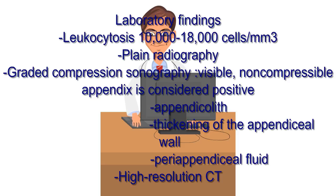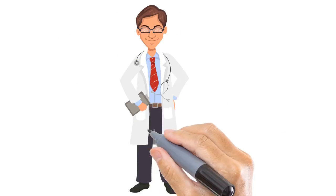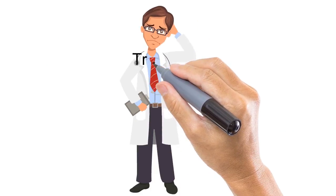High-resolution CT scans have also been used to diagnose appendicitis. On CT, the inflamed appendix appears dilated, around 5 cm, with a thickened wall. There is usually evidence of inflammation with dirty fat, thickened mesoappendix, and even an obvious phlegmon.